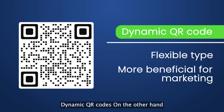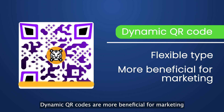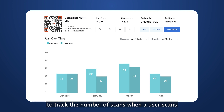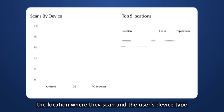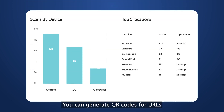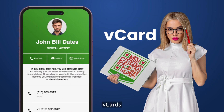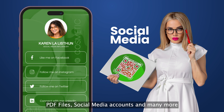Dynamic QR codes, on the other hand, are the flexible type. Dynamic QR codes are more beneficial for marketing since you can set up a QR code tracking system to track the number of scans, when the user scans, the location where they scan, and the user's device type. You can generate QR codes for your URLs, business cards, PDF files, social media accounts, and many more.